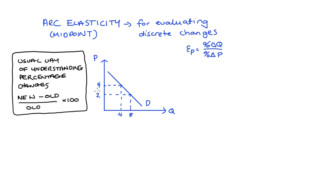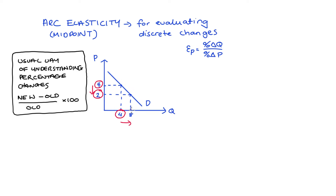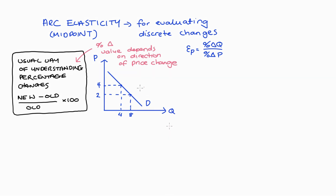To see this, if we increase the price from $2 to $4 and the quantity decreases from 8 to 4, the old quantity is 8 and the old price is $2. But if the price decreases from $4 to $2, leading to an increase in quantity from 4 to 8, the old and new variables swap places. Putting those numbers into the formula gives a different result, so we'd get two different elasticities associated with the same region of the demand curve.